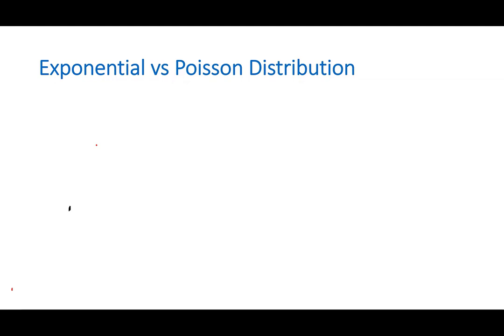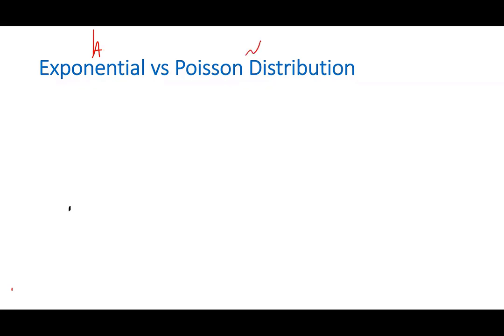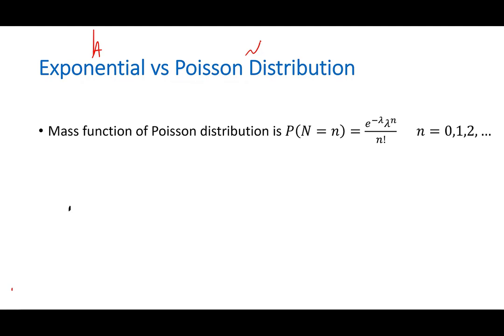Another thing is that when you say a process follows the exponential distribution, exponential and Poisson are two sides of the same coin — they are talking about the same process, for example the arrival of bikes. Exponential is talking about A, which is the inter-arrival time. Poisson talks about N, which is the number of arrivals per minute or per time unit.